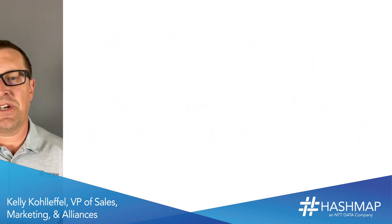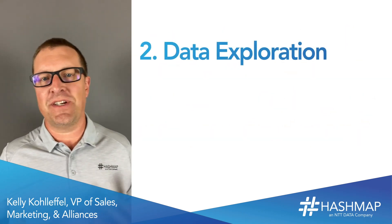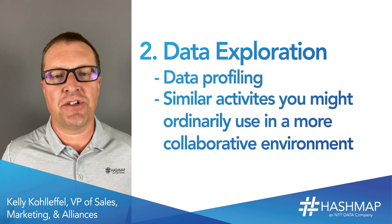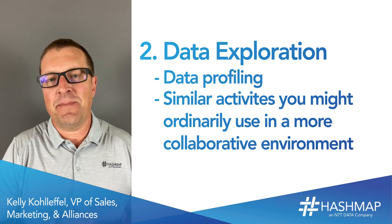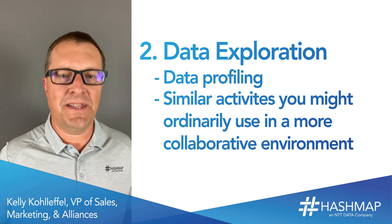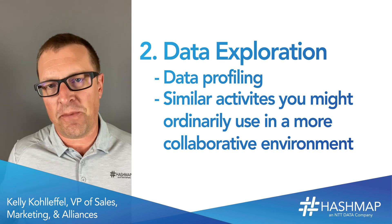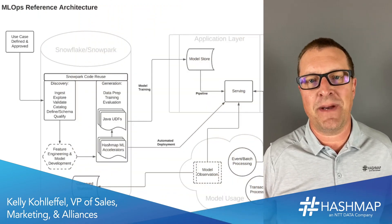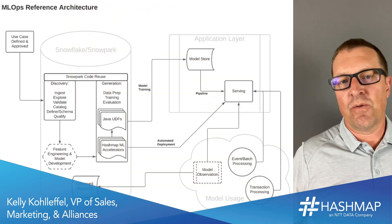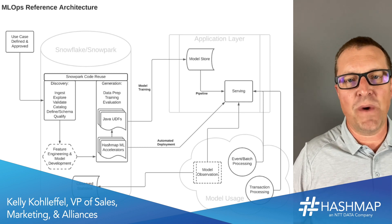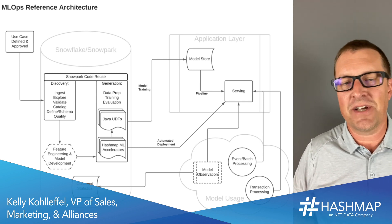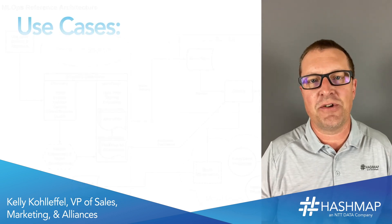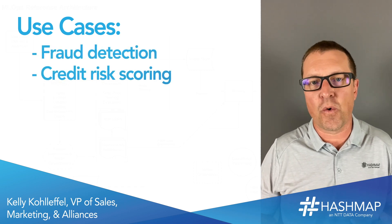A second great way to put Snowpark to use is for data exploration and data profiling — similar activities you might ordinarily use in a more collaborative environment such as a Jupyter notebook. Our team set up an almond kernel to enable Scala within Jupyter and then use the Snowpark API to interact with data on the fly. We've also been integrating Snowpark into HashMap's MLOps framework, replacing some high-cost data processing clusters with Snowpark API calls. This is a generalized use case applicable across various financial services industry use cases — think fraud detection and credit risk scoring as examples.